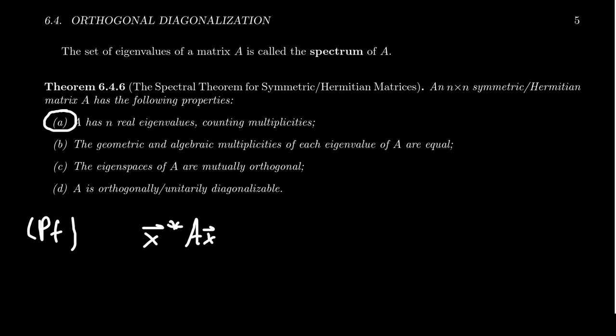So consider this quantity X star AX. And I want you to take the star of that. So take the conjugate transpose. Well, the conjugate transpose itself is also a shoe sock operator. It switches the order of everything. So the last term becomes the first term X star. You get A star, and you're going to get X star star. The star, kind of like the transpose, if you take the double star, they just cancel each other out. So you end up with X star A star X. And this is the point where Hermitian is actually important. Hermitian implies that A star equals A. So this equals X star AX, like so.